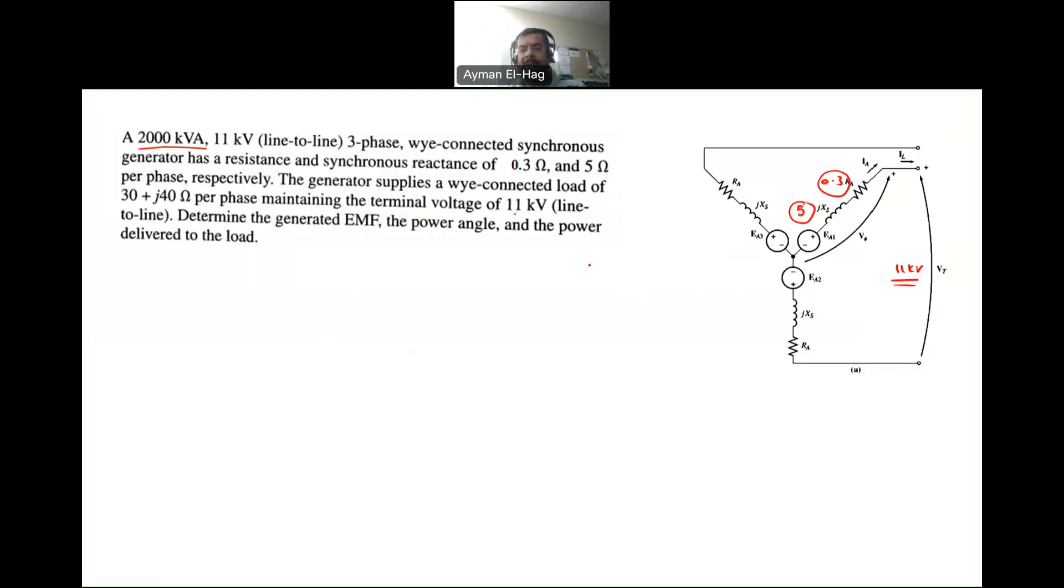So how to proceed with this question? Start by drawing the circuit model of the generator connected to the load. So my generator model is, as we know it, is basically RA, which is 0.3 ohm, and XS, which is J5, and EA is the unknown, and we have here IA. Now, this is the voltage at the terminal, which is here, it's V phase. So it's the phase voltage of the terminal voltage, and we have the load connected to it.